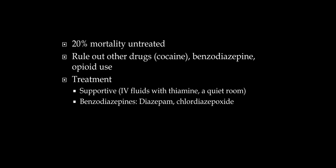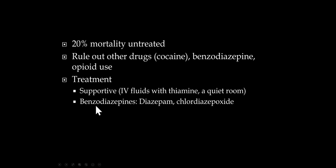Treatment is supportive — we give IV fluids with thiamine (called a banana bag in clinical settings because the fluids have a yellow appearance). We want the patient in a quiet room to avoid activating the sympathetic system further. We give these patients benzodiazepines — usually a lot, frequently for several days — to prevent sympathetic overactivation, the really high blood pressure, fast heart rate, and withdrawal seizures.